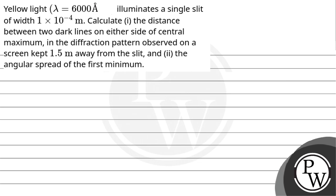Let's read the question: yellow light of wavelength 6000 angstrom illuminates a single slit of width 1×10⁻⁴ meter. Calculate first the distance between the two dark lines on either side of the central maximum in the diffraction pattern observed on a screen kept 1.5 meter away from the slit, and second the angular spread of the first minimum.